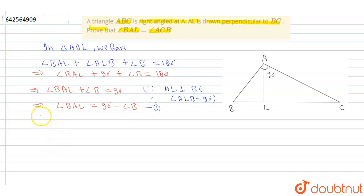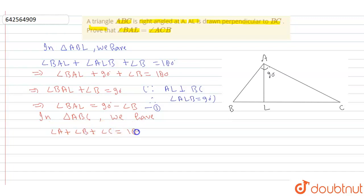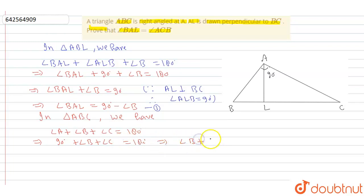Now, in triangle ABC, we have angle A plus angle B plus angle C is equal to 180 degrees. From the figure, angle A is equal to 90 degrees, so 90 degrees plus angle B plus angle C is equal to 180 degrees, or we can write angle B plus angle C is equal to 90 degrees, because 180 minus 90 is equal to 90 degrees.